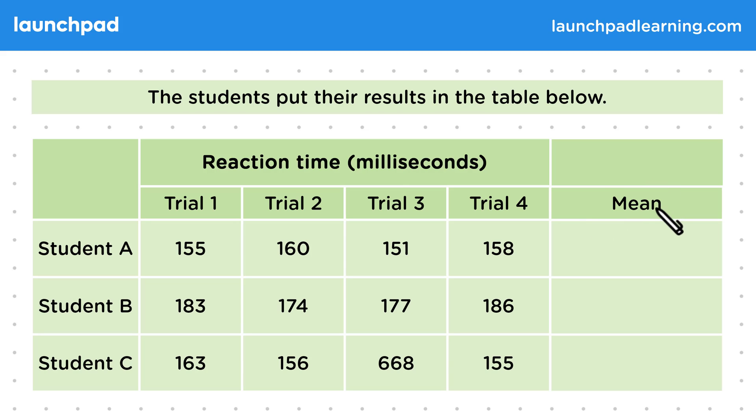Before calculating the mean, we need to identify any anomalies in the data. These are values which stand out from the other repeats. Because they're different from the other values, they're likely to have been caused by an error. The only anomaly in this table is this value here for student C.